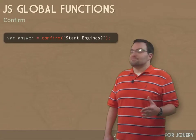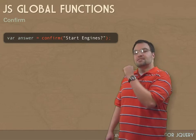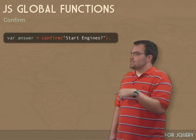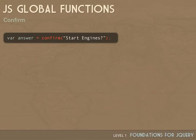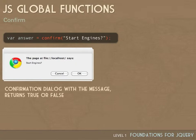Second, let's look at the confirm function. On the left side I've got var answer — I'm saving the results of confirm into a variable named answer. I say confirm and then pass in a message. It pops up a dialog with a cancel button and OK. If the user clicks cancel, the function returns false. If they click OK, it returns true. You can then take that result and do some switching with an if statement.